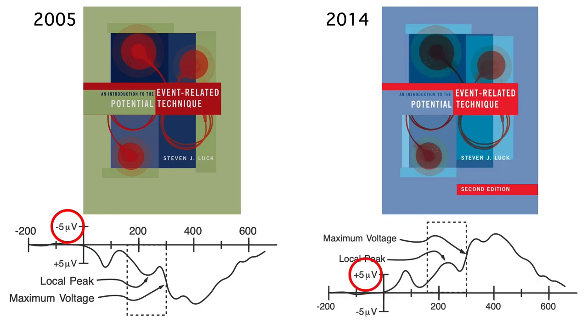I eventually saw the light, so in the second edition of my book all the figures were plotted with positive upward. The bottom line is that plotting negative up is an outdated convention, but it's still pretty common, so you need to make sure you look at the polarity indicators in the plots of ERP waveforms.